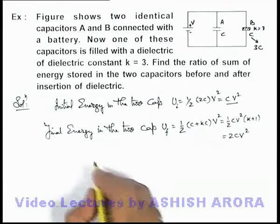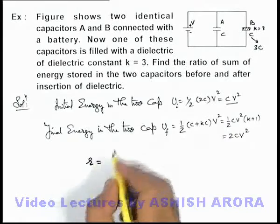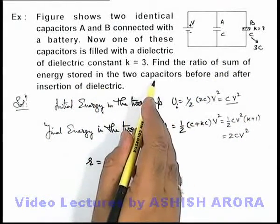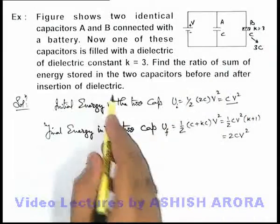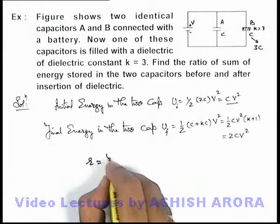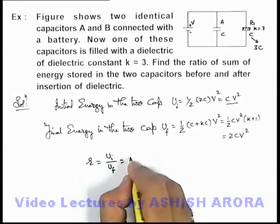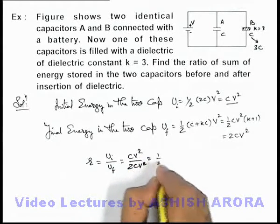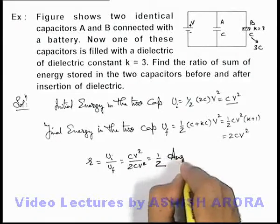Now if we wish to calculate the ratio, we require to find the ratio of sum of energy stored in the two capacitors before and after insertion of dielectric. So this ratio will be U_i by U_f. This can be written as CV square by 2CV square, that will be 1 by 2. That will be the answer to this problem.